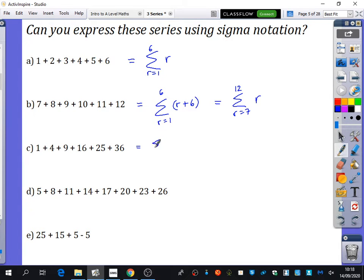So this one here, the sum of r squared from r equals one to six.